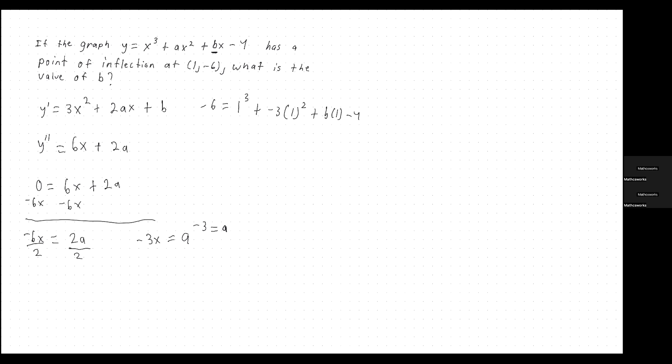So from here, it's just algebra. So we would get 1 plus negative 3 plus b minus 4. That's equal to negative 6. So let's combine everything we can. So we get negative 2 minus 4 plus b. So that is negative 6. That's negative 6 plus b is equal to negative 6.